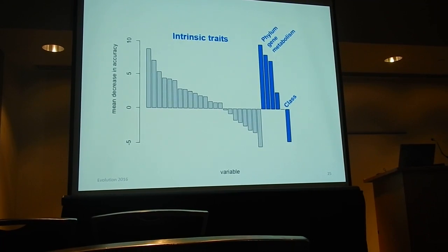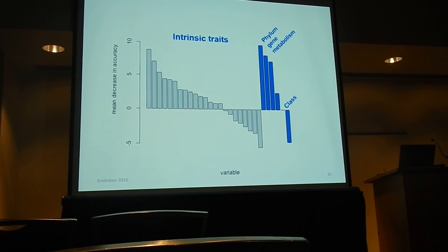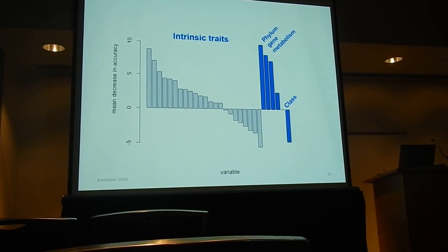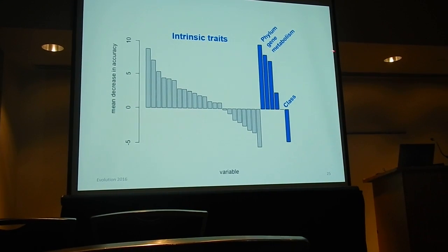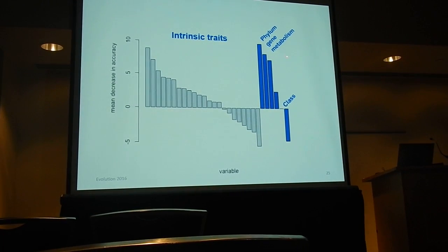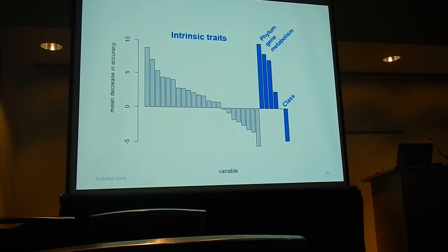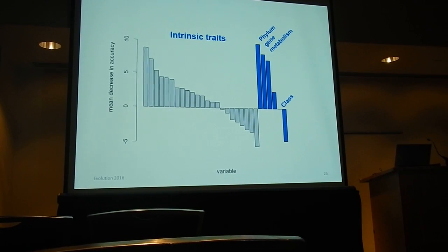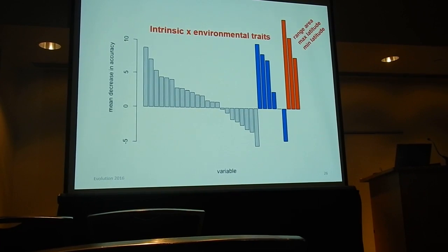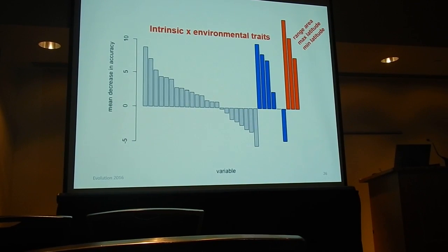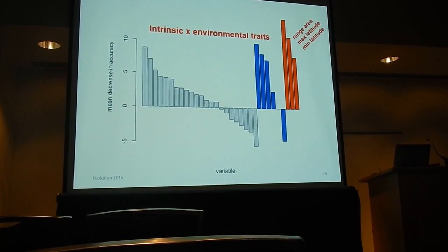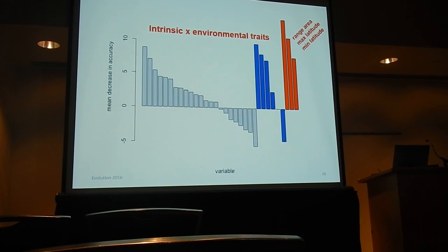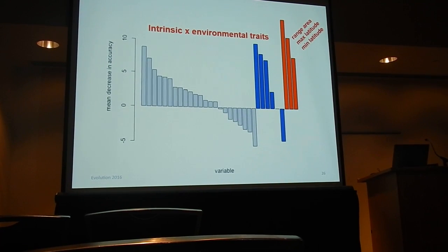For intrinsic traits, we have a mix: some are good, some are bad. Things like the gene used, the metabolism, and the phylum of the organism end up being important predictors. Other taxonomic ranks like class end up being not as important. Interestingly, all of the intrinsic-by-environmental interaction traits are very good predictors of isolation by distance.